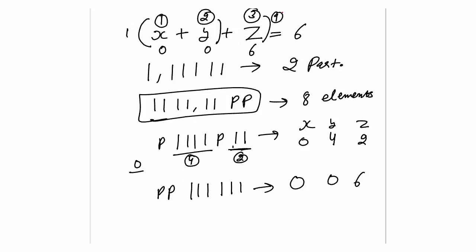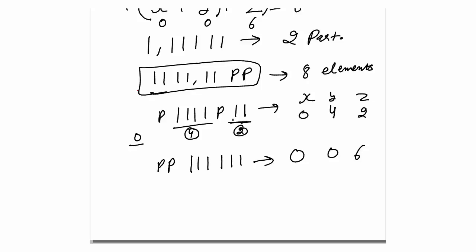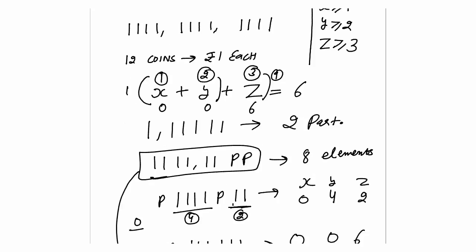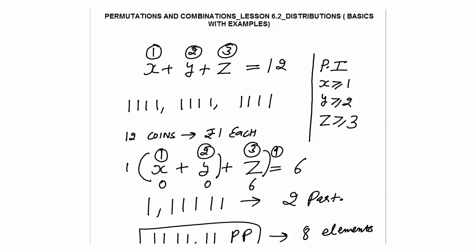So in how many ways can I do that? This is the total arrangement of all 8 elements. The number of arrangements is 8 factorial divided by 6 factorial times 2 factorial, which equals 8C2 = 8×7÷2 = 28. So there are 28 ways where x plus y plus z equals 12, such that x ≥ 1, y ≥ 2, and z ≥ 3.